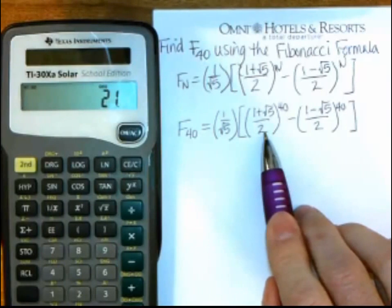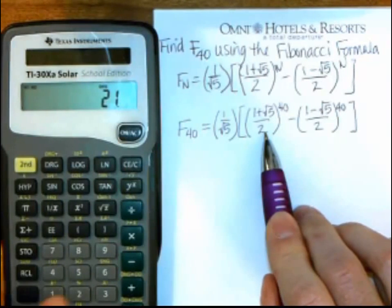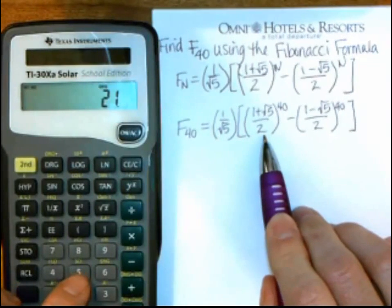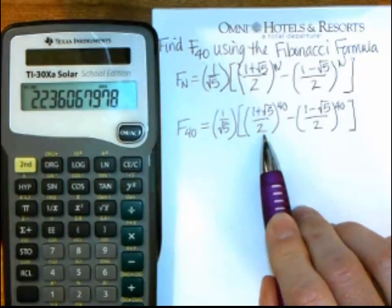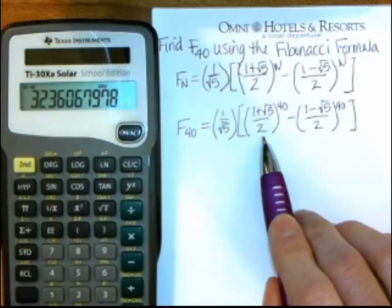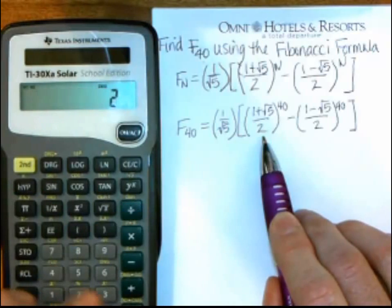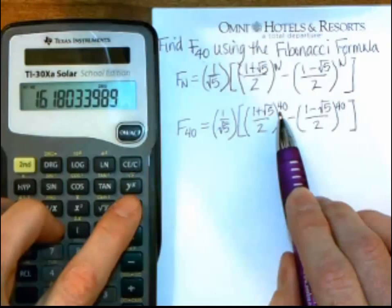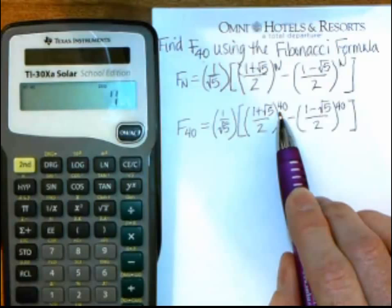So again, start inside this innermost parenthesis set, and on this calculator I have to do 5, and then the square root, and then plus 1, and then divide by 2, and then raise to the, there's a to the button, to the 40th power.